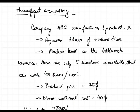Welcome back to your ACCA F5 trainee videos. In this session we are going to deal with throughput accounting — a short example on throughput accounting. The idea behind throughput accounting is that the only variable cost in the short term are the direct material costs. All other costs, including labor, are considered fixed costs or operating expenses of the period.